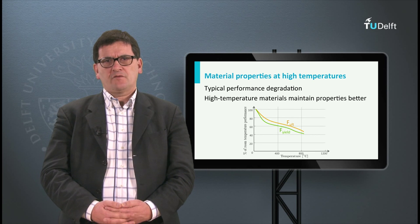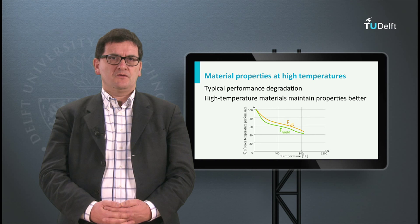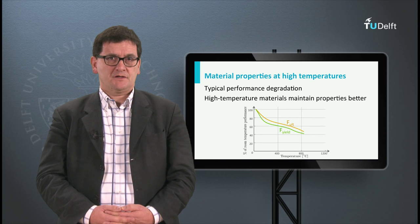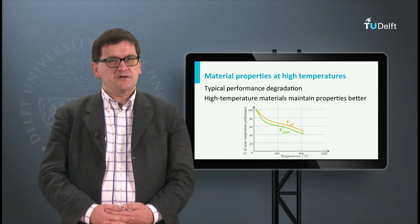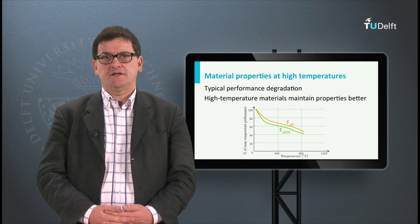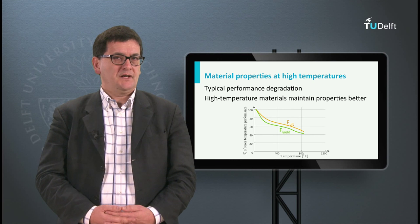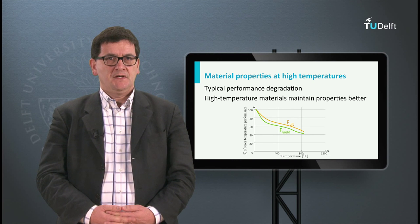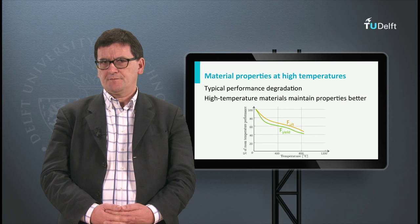If we need an aircraft material for high temperatures, we have to look for materials like titanium alloys or specific steel alloys. In this respect titanium is favorable because of its low density, which is 4500 kg per cubic meter. This is much lower than for the steel alloys.